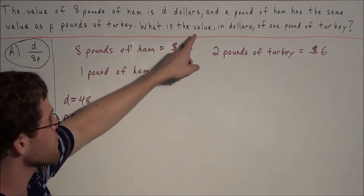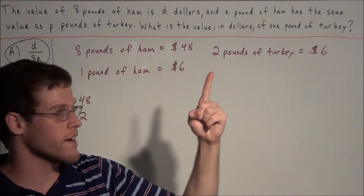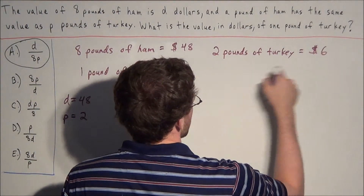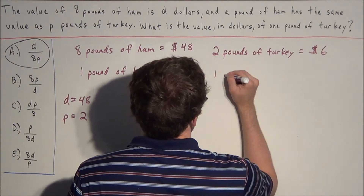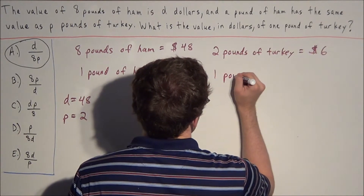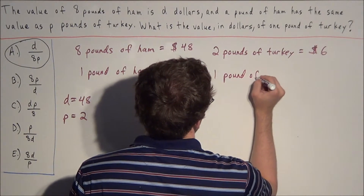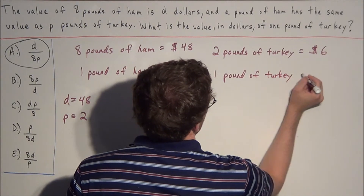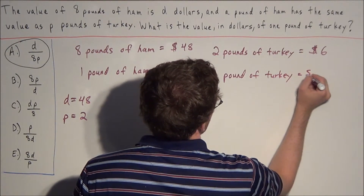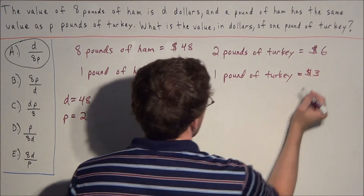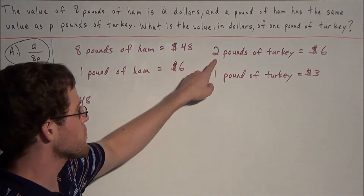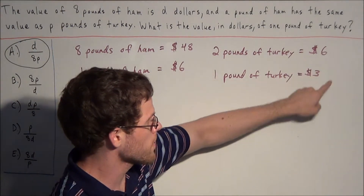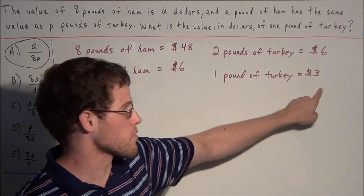To find the value in dollars of 1 pound of turkey, we divide both sides by 2. So 1 pound of turkey equals 3 dollars, because 2 divided by 2 is 1 and 6 dollars divided by 2 is 3 dollars.